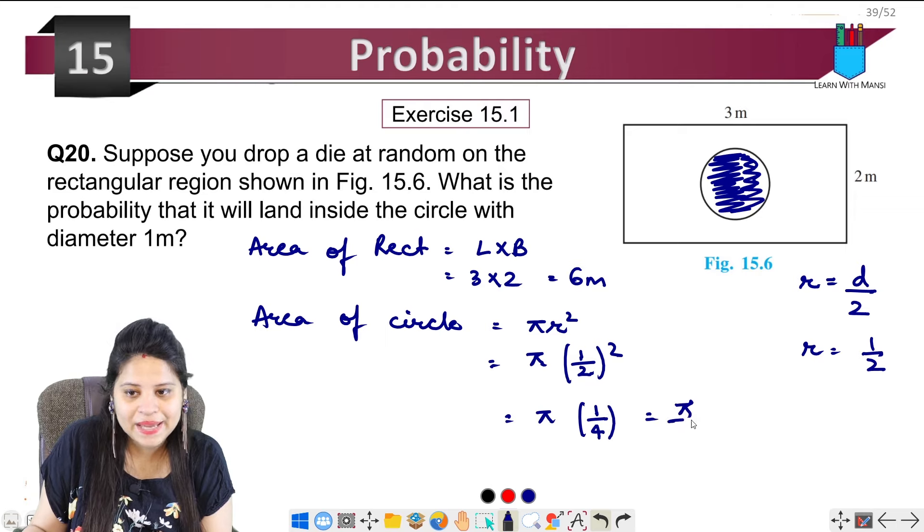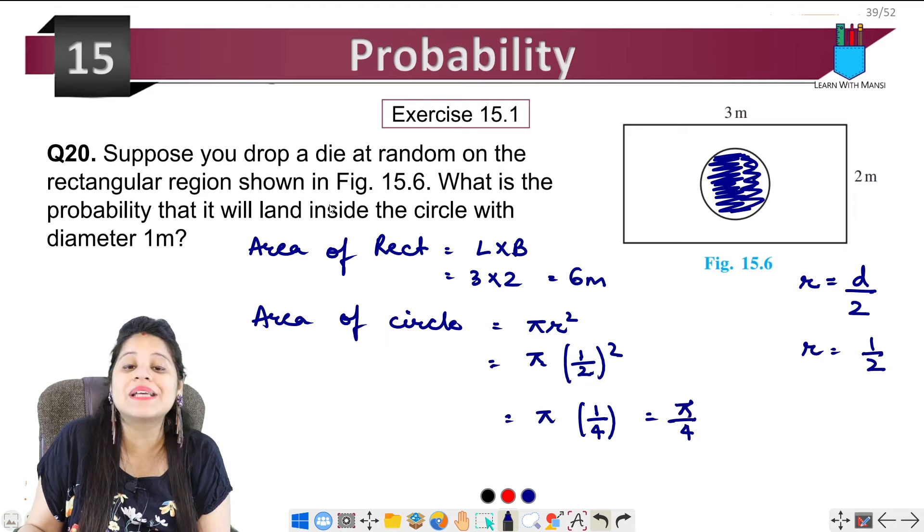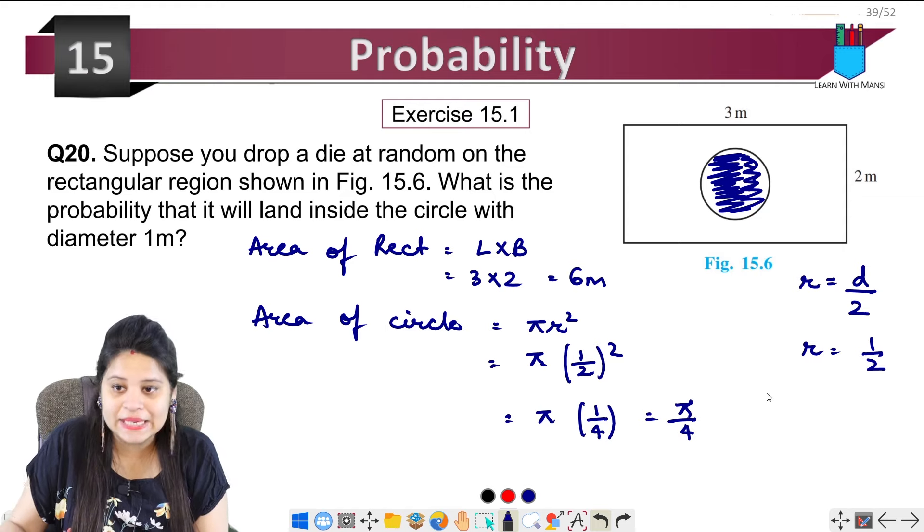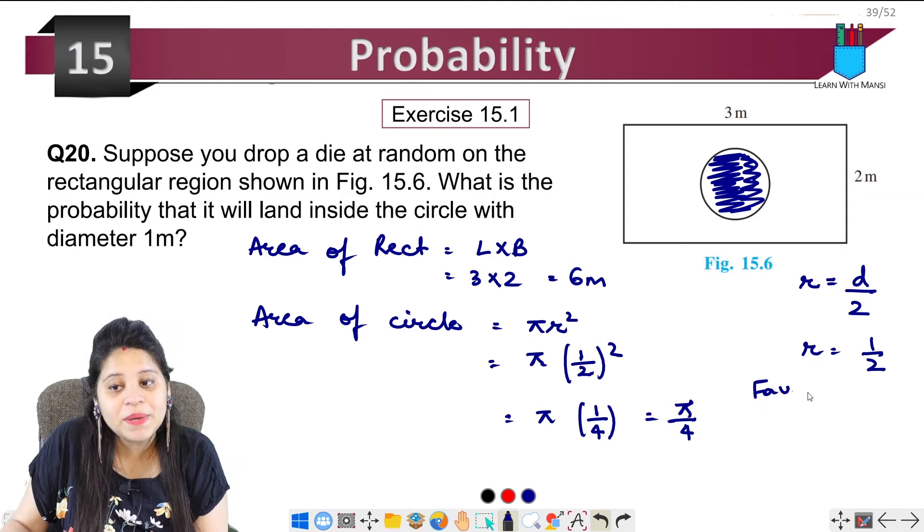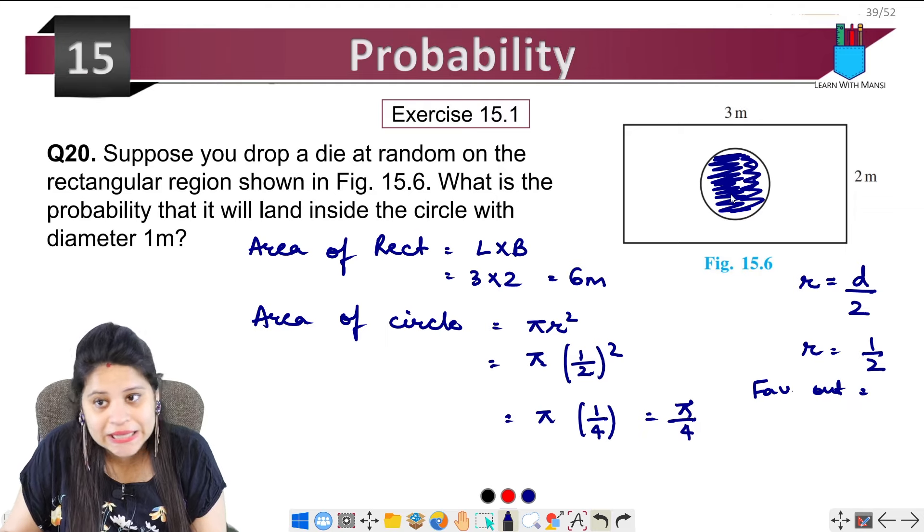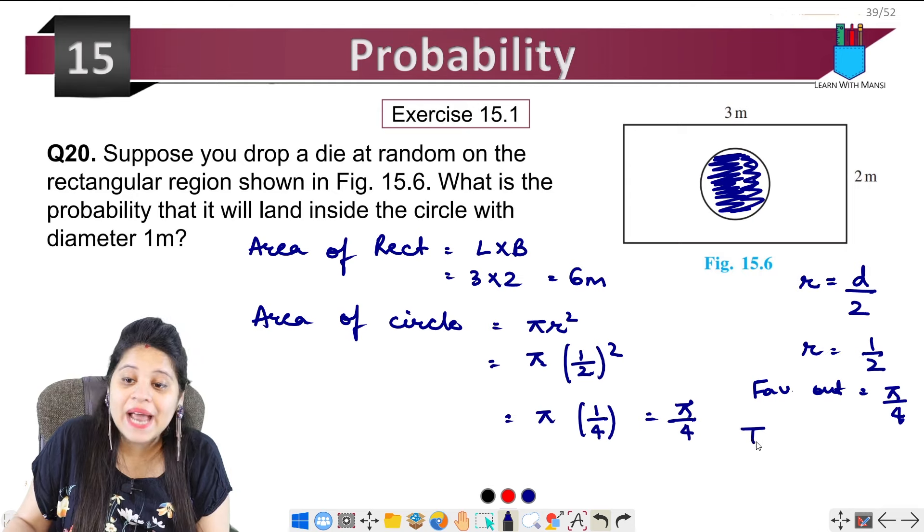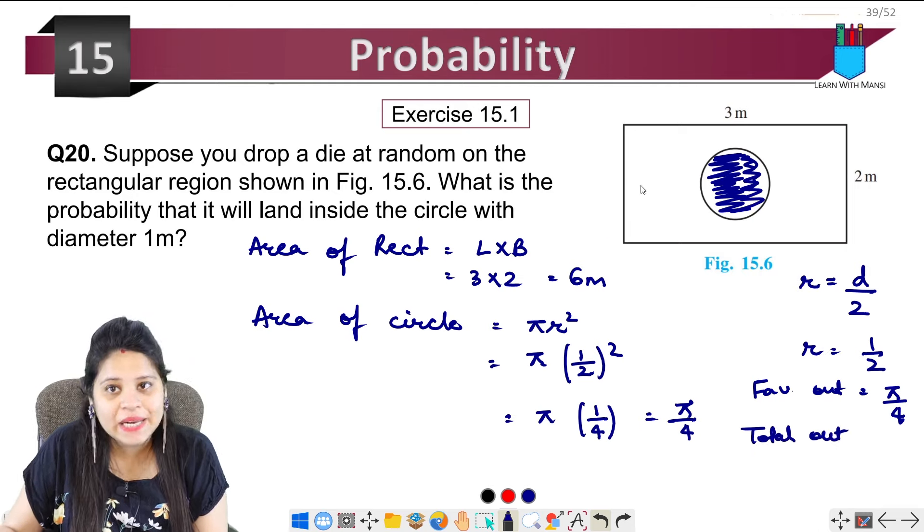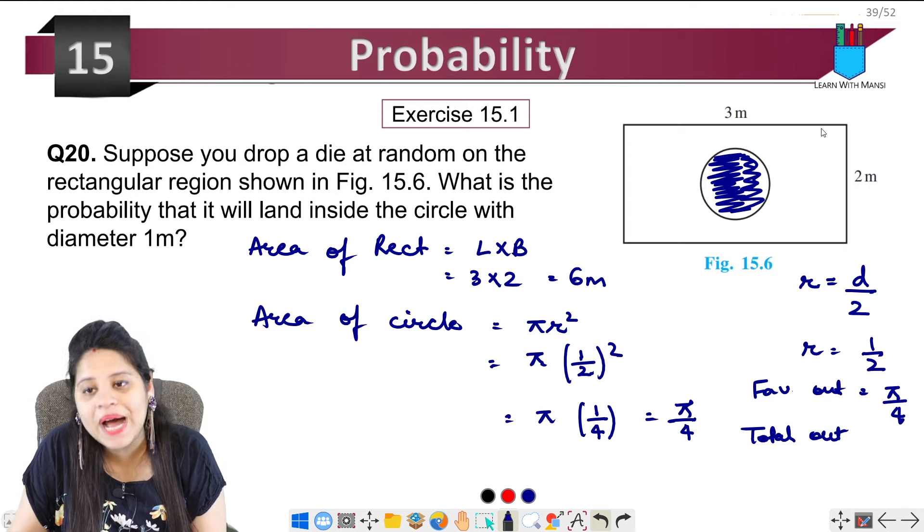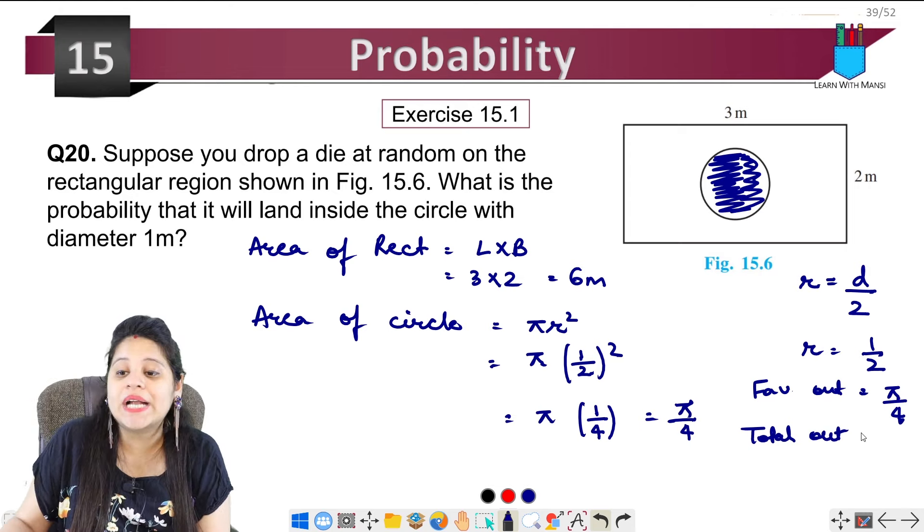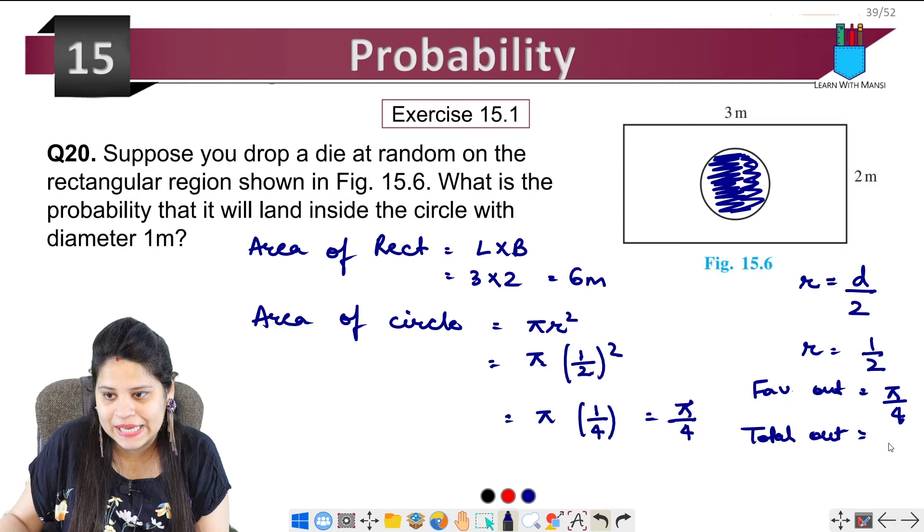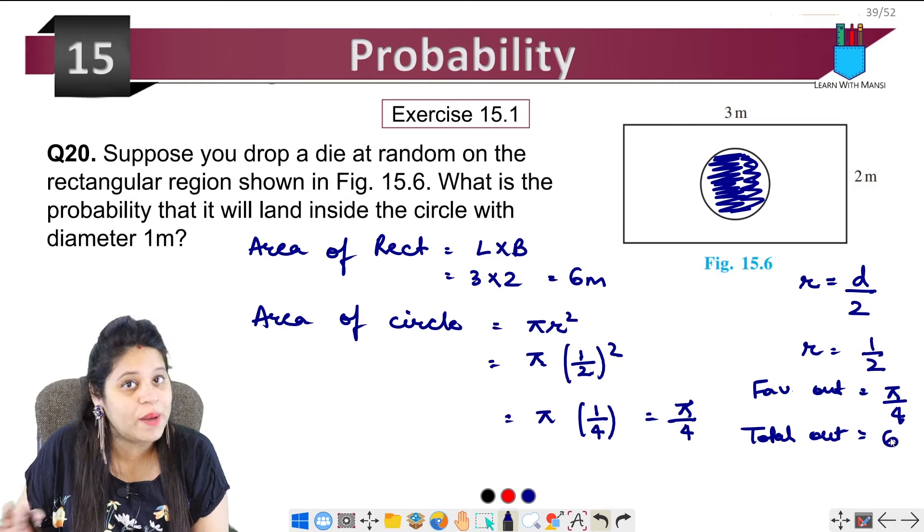Now we need to find if it will land inside the circle. What is our favorable outcome? The favorable outcome is the area of circle, pi upon 4. And our total outcome is the rectangle area, which is 6.